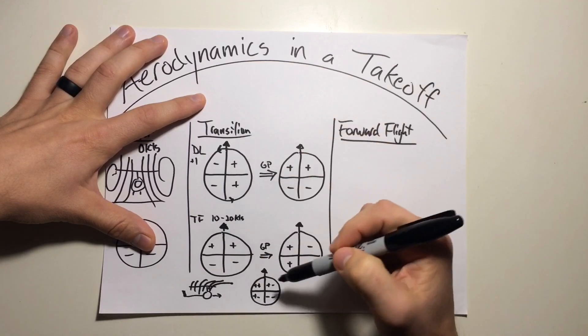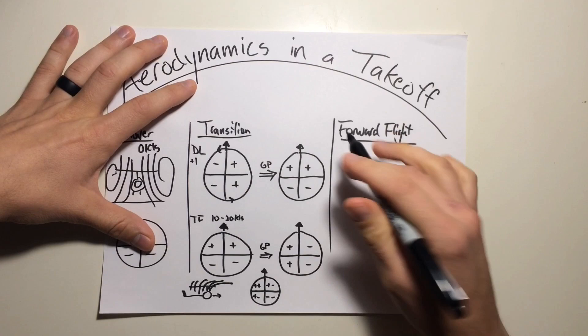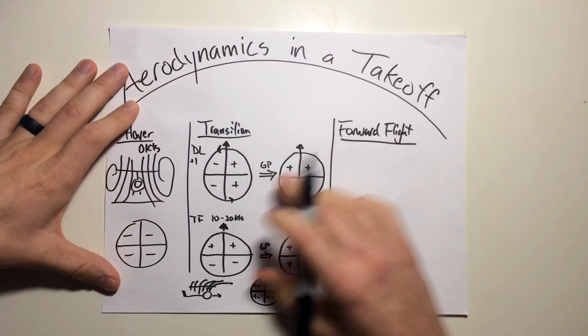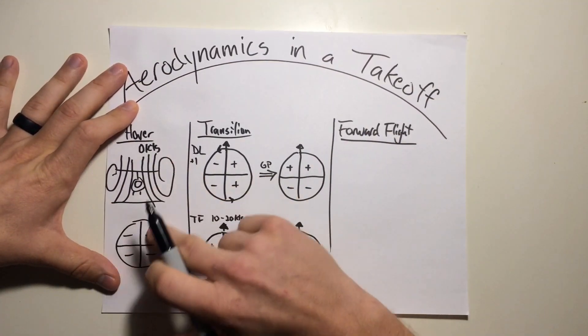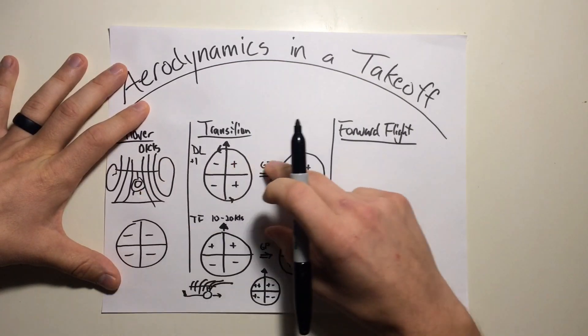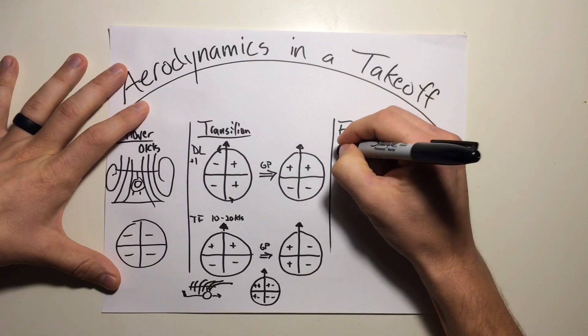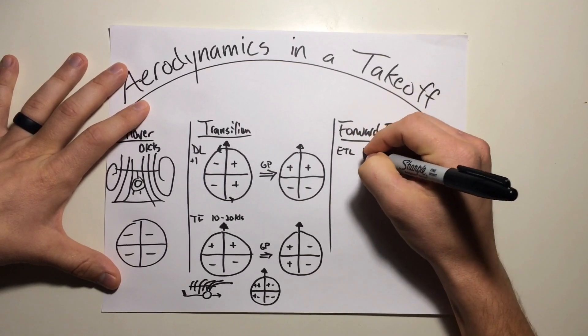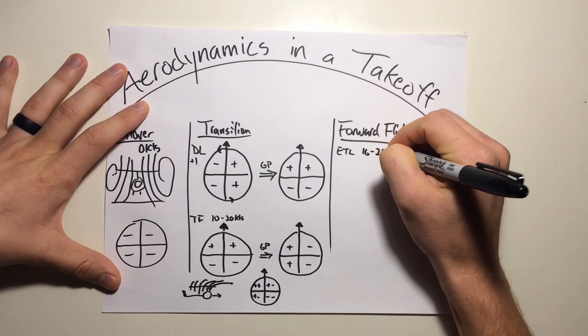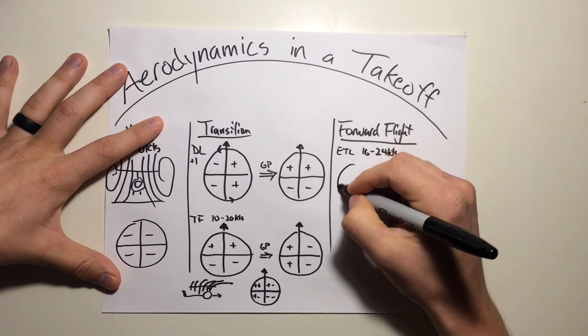But once we get through this transition phase and we get into forward flight, we start to get more efficient and have a slightly different characteristic of lift. So we talked about it at hover, we're operating in our own wingtip vortices. We're transitioning through these vortices, getting into cleaner undisturbed air. Forward flight, this is when we get to effective translational lift, which is around 16 to 24 knots. This is when the rotor disk has outrun its vortices and begins to operate in cleaner air.